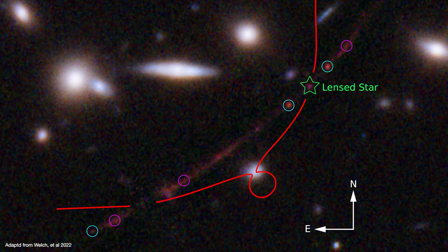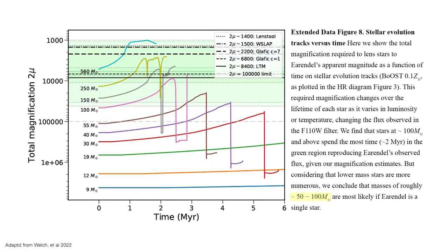However, Earendel appears faint despite being magnified many, many more times than the surrounding cluster images. And that means Earendel has to be much less massive than a cluster. So working backwards, the team estimated that Earendel's mass has to be somewhere in the 50 to 100 solar mass range.